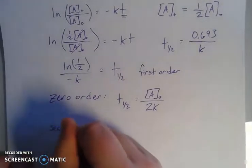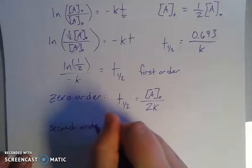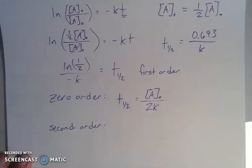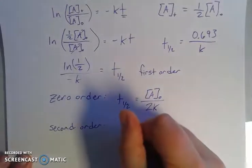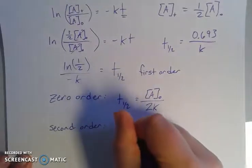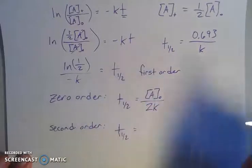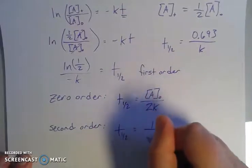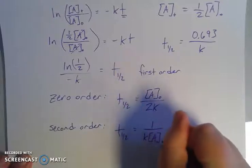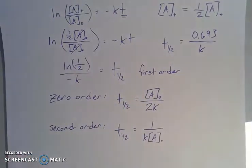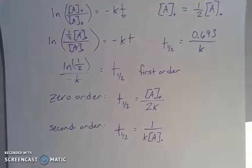For second order, it's sort of the inverse like with the integrated rate laws in general. The half-life equals one over the rate law constant times the initial concentration. That's the equation you use there.